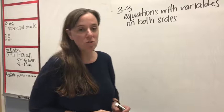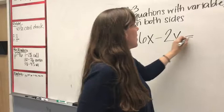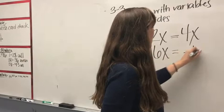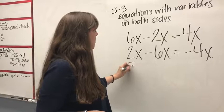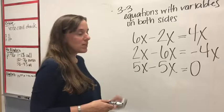Just a little review: if you have two like terms like 6x minus 2x, your answer is going to be 4x. If you have 2x minus 6x, you're going to get negative 4x, because 2 minus 6 is negative 4. And 5x minus 5x is going to be 0.